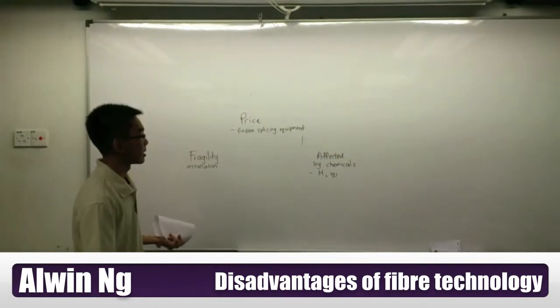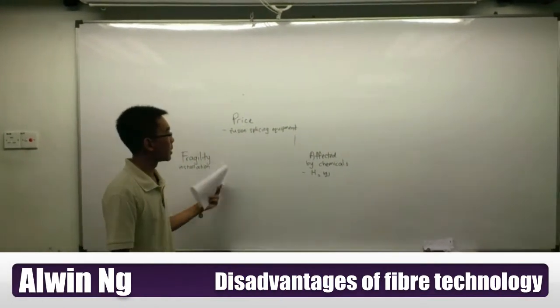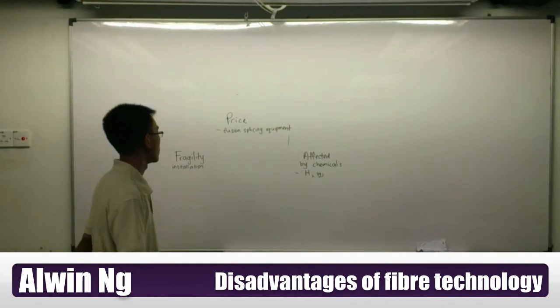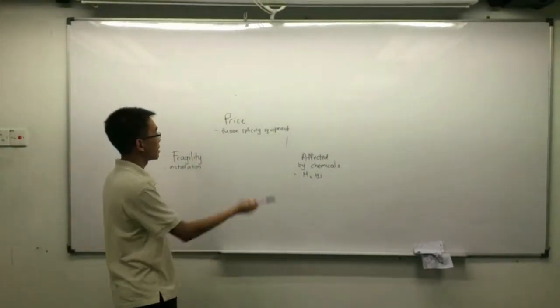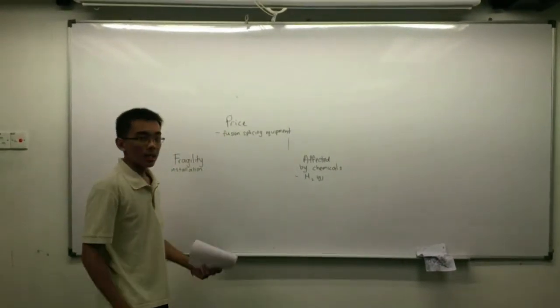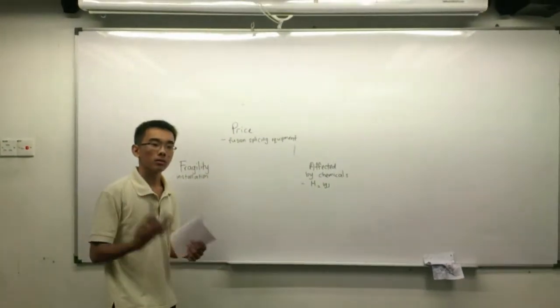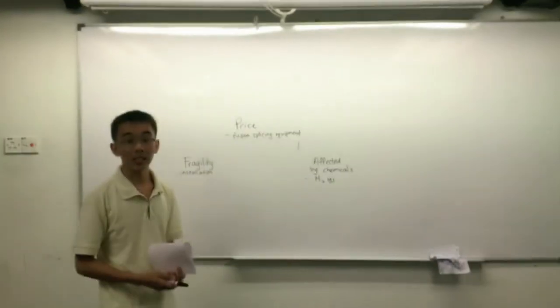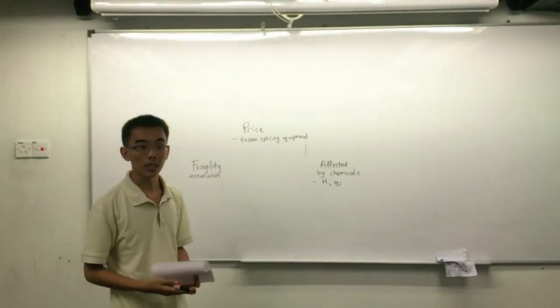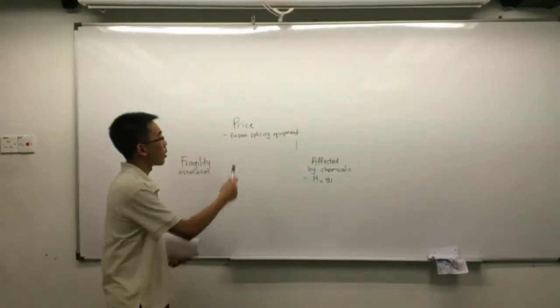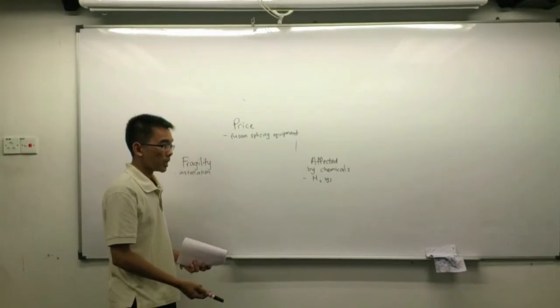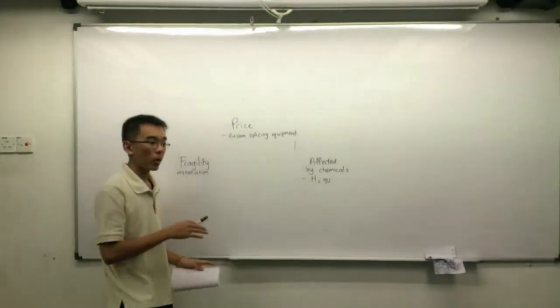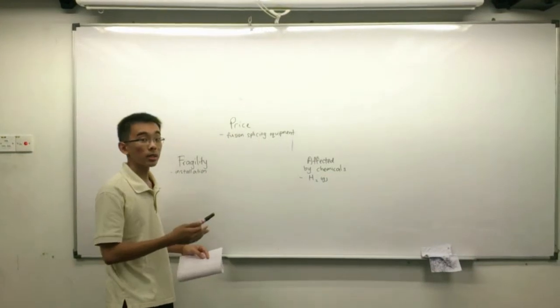Alright, I'm going to explain about the disadvantages. As you can see, I'm going to pinpoint three different factors which is fragility, price, and being affected by chemicals. First is price. Even though fiber optic is made from sand which is in abundance and rather cheap compared to copper wire, but because it requires fusion splicing equipment, therefore the prices per meter for fiber optic wire is higher than copper wire.